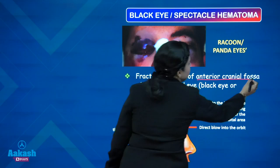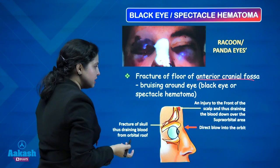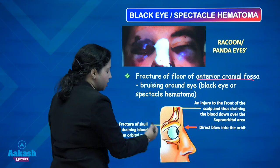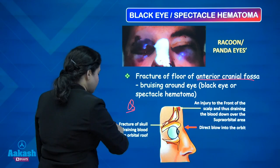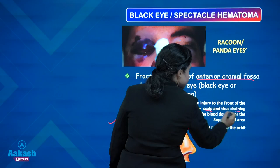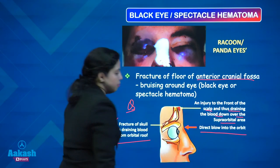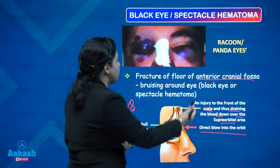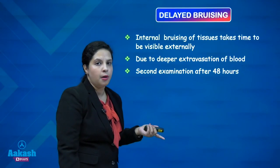A black eye or spectacle hematoma, also known as raccoon or panda eyes, can have three causes: fracture of the skull draining blood from the orbital roof; injury to the front of the scalp draining blood over the supraorbital area; or a direct blow into the orbit. It is not necessarily caused only by an anterior cranial fossa fracture.